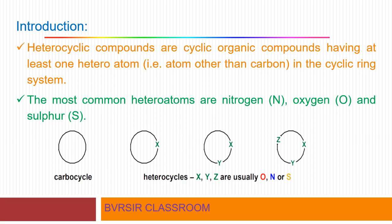Introduction towards heterocyclic compounds. Heterocyclic compounds are cyclic organic compounds. The specialty of these heterocyclic compounds is that they have at least one heteroatom — that is, an atom other than carbon — in the cyclic ring system.